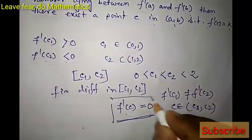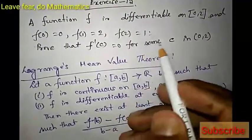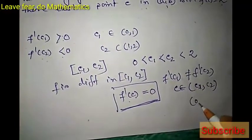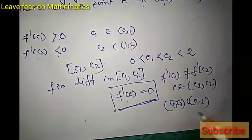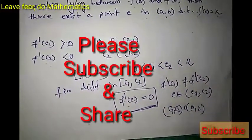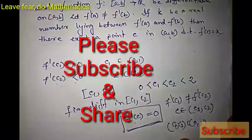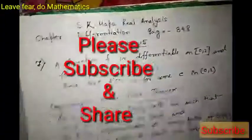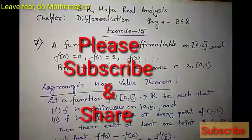This is what we needed to prove. Since (c1,c2) is contained in open interval (0,2), our claim is readily proved. Thank you friends for watching the video. Hope you enjoyed it — please subscribe the channel, share the video with your friends, and stay tuned as we will come back with more videos like this. Thank you.